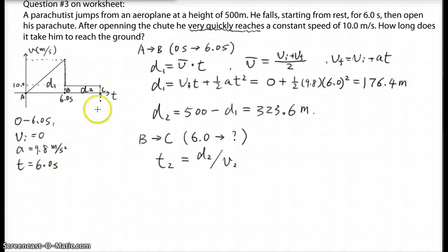So V2 is actually the velocity here. V2 equals 10 m per second. So that's easy. So it should be 323.6 divided by 10. So we should get 32.36 seconds. The total time we got should be 6.0 seconds plus 32.36 seconds. Add it together, we should get 38 seconds.